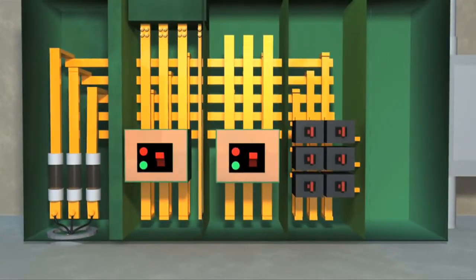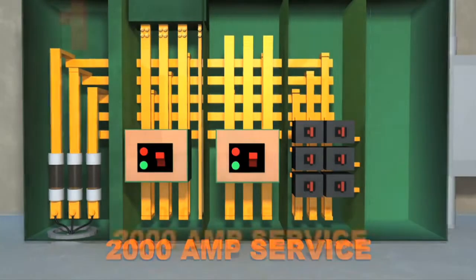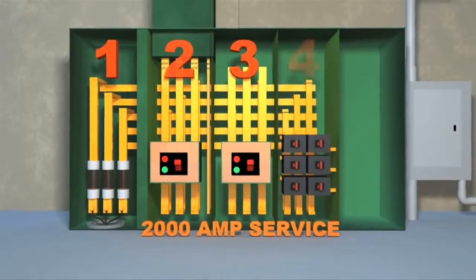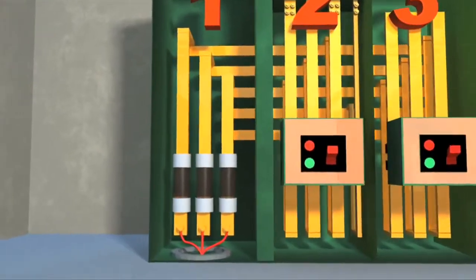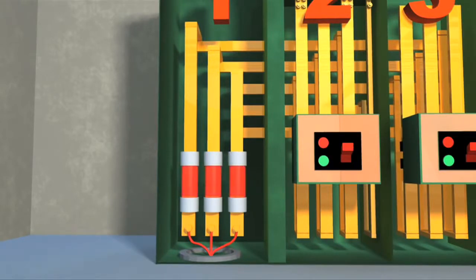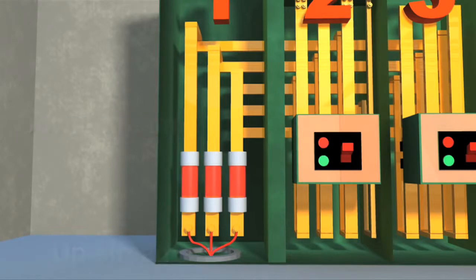Here in our example, we have switchgear that is rated at 2000 amps. It consists of five sections connected together. As you can see, section one contains the incoming voltage connected to the main fuses. These main fuses protect the downstream electrical equipment within the switchgear from exceeding 2000 amps. In the event that more than 2000 amps are drawn, these fuses will open and disconnect voltage.